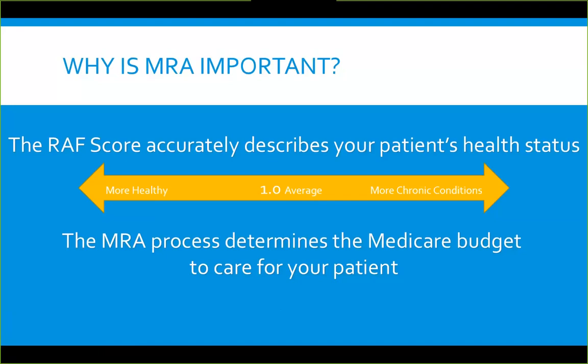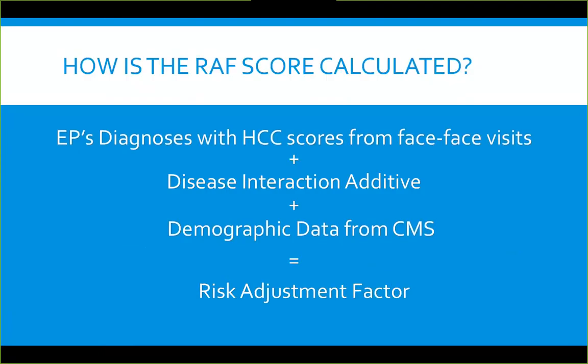This is not just a Utica Park Clinic issue — across the state we're not accurately describing our patients' health status back to Medicare. The MRA process determines the Medicare-based budget to care for your patient. Medicare Advantage plans submit these risk scores to Medicare, which then funds them to care for those patients. A low score means an inadequate budget.